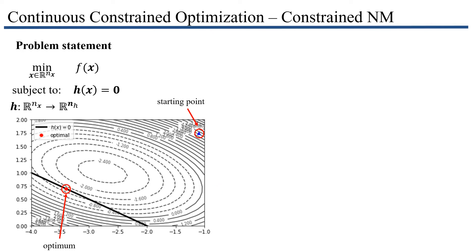So how do we solve this problem? We're going to tailor Newton's method from the previous lecture and apply it to this kind of problem. The first thing we're going to do is define what's called a Lagrangian function. This function is simply the objective function plus my equality constraints, weighted by some variable called the Lagrange multiplier. This is a way of incorporating the constraints into the objective such that they are weighted.